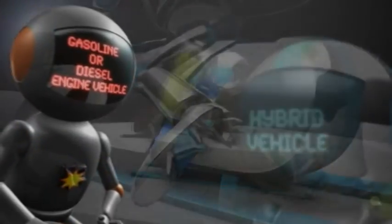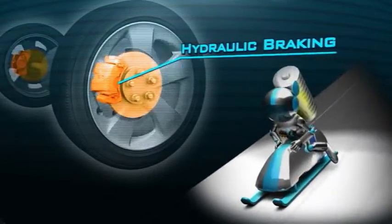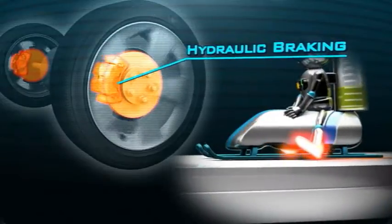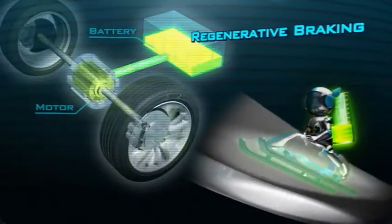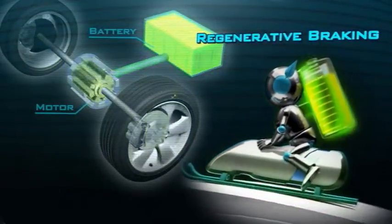Unlike a conventional vehicle, hybrid vehicles have two braking systems. They have a conventional hydraulic brake system, which stops the car using friction, and a regenerative brake system, which stops the car using electrical resistance.